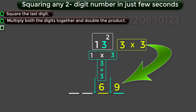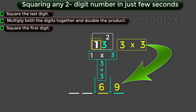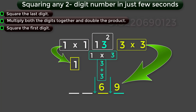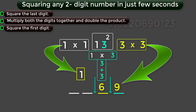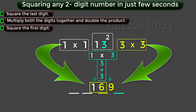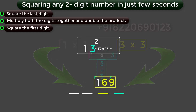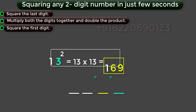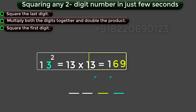Step 3 — square the first digit. Square the first digit 1, you will get 1. This 1 becomes the first part of the answer. Now, combine all these digits together, you will get the number 169, which is the square of the number 13.